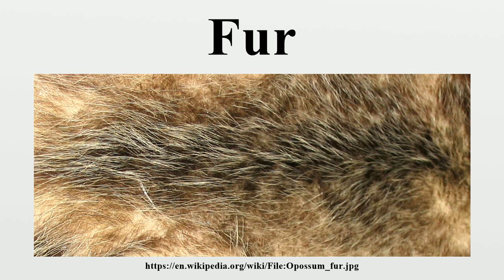Though their thin basal portion prevents their being erected like true guard hairs, the modern fur arrangement is known to have occurred as far back as docodonts and eutriconodonts, with castor, cauda and spina less preserving compound follicles with guard hair and under fur.